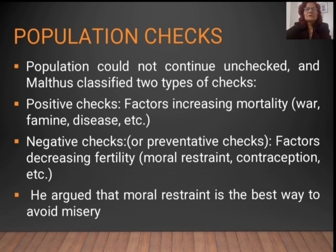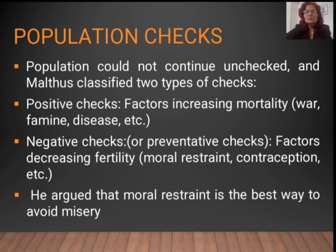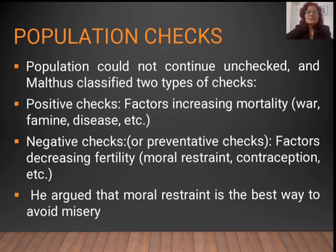Population could not continue unchecked, and Malthus classified two types of checks. One is positive checks — factors increasing mortality such as war, famine, disease, plague, and events like the COVID-19 pandemic, which can also affect population at any period of time.